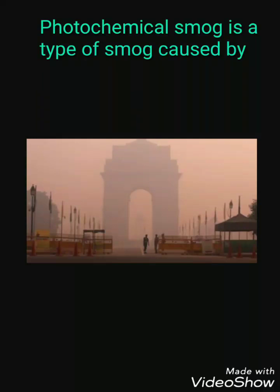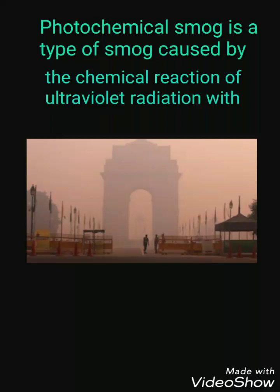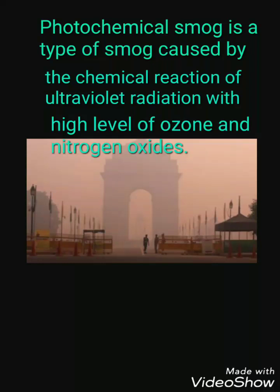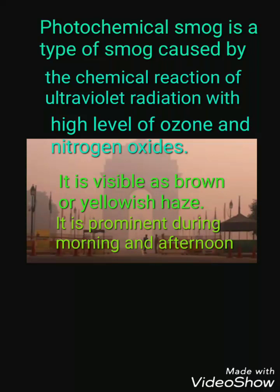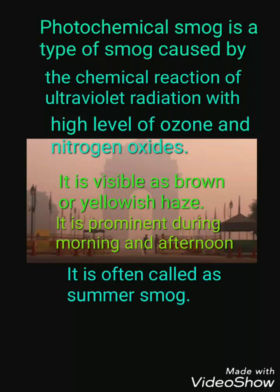Photochemical smoke is a type of smoke caused by the chemical reaction of ultraviolet radiation with high levels of ozone and nitrogen oxides. Smoke is visible as a brown or yellowy haze and it is prominent during morning and afternoon.